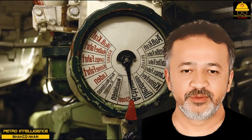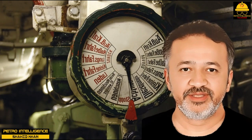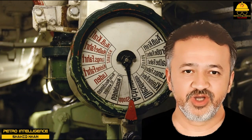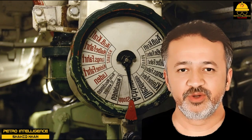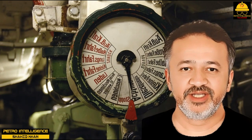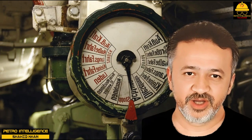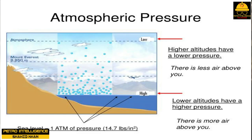Pressure is an important variable that must be carefully monitored and controlled in an industrial environment. Pressure is defined as force per unit area — the amount of force exerted by fluid on the equipment in which it is contained. Pressure is measured in pounds per square inch (PSI) in the English system, kilograms per square meter in the metric system, and Newtons per square meter or Pascals in the SI system. Two of the most common types of pressure are atmospheric and hydrostatic.